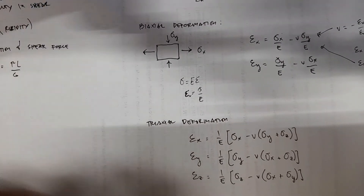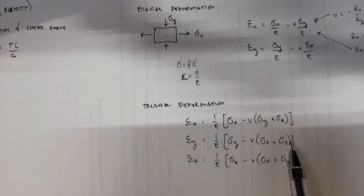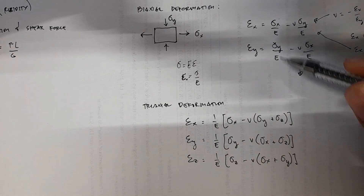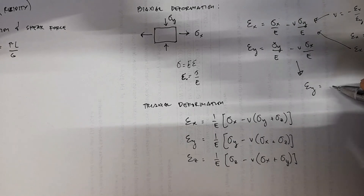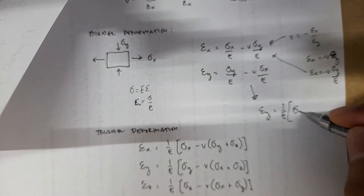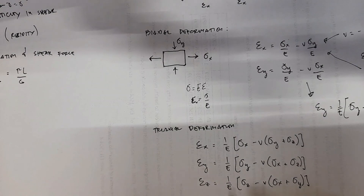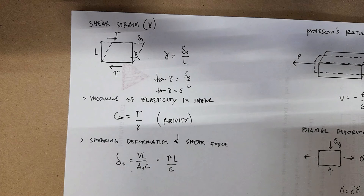We also have triaxial deformation, which is when you have simultaneous actions of stresses in three dimensions: X, Y, and Z. It's similar to biaxial deformation, only with an additional dimension. Taking out the common term, EY equals 1 over E times (stress Y minus V times stress X), plus the additional stress Z dimension. So to summarize, we covered triaxial deformation, biaxial deformation, Poisson's ratio, and shear strain.